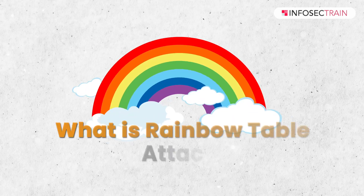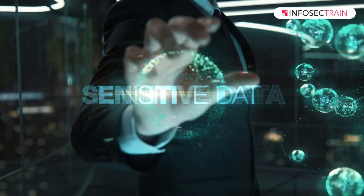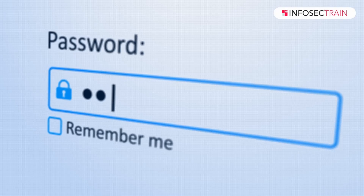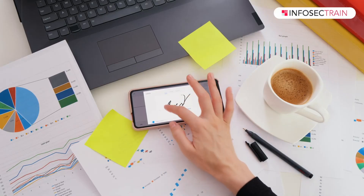The second question is: what is a rainbow table attack? In the realm of cybersecurity, one of the most fundamental aspects is the protection of sensitive data, often accomplished through the use of cryptographic techniques. Hash functions, a critical component of cryptography, convert data into a fixed-length string of characters, providing a way to securely store and verify passwords, digital signatures, and more. However, even the strongest cryptographic methods are not immune to attack, and one such potential attack vector is a rainbow table attack.